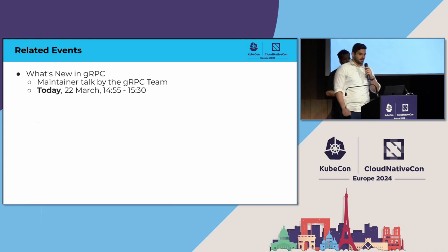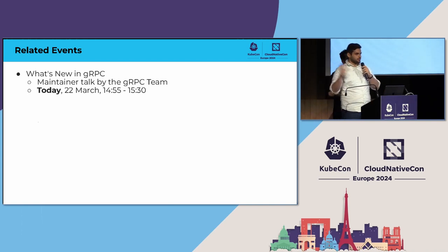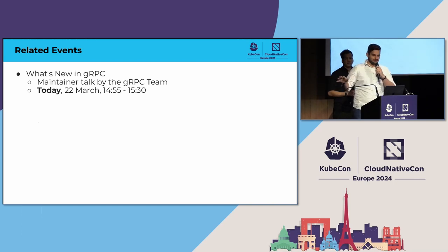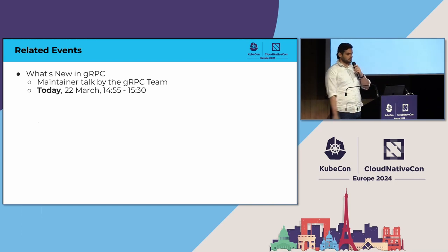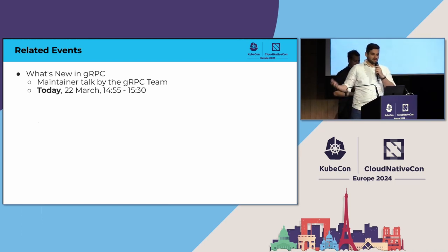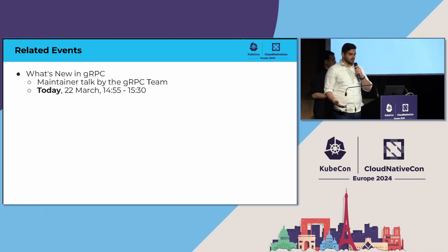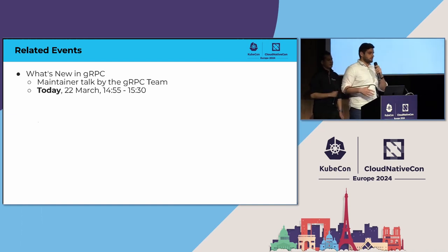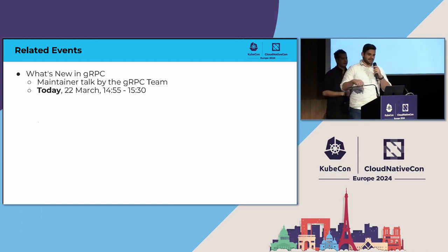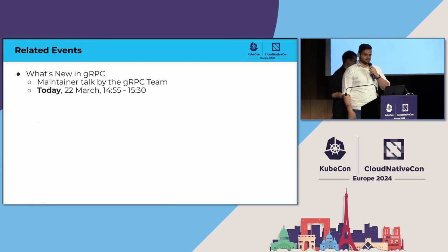I have one thing to plug. Normally, this is where we show you all of the great related talks at KubeCon this year, but we are very close to the end of things, so we only have one talk to plug right now, which is 'What's New in gRPC.' This is a maintainer talk run by the gRPC team covering everything that's happened with gRPC recently, including a brief mention of gRPC route. That is happening immediately after this talk, so if you want to follow me down the hall, I'd love for some of you to join me.